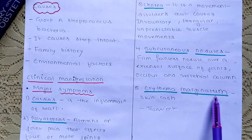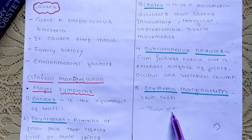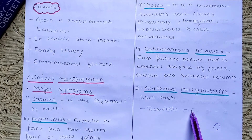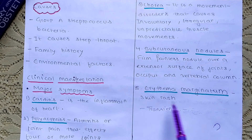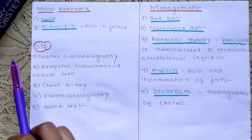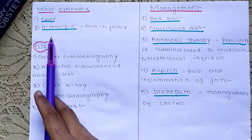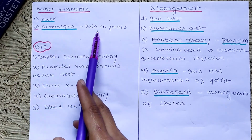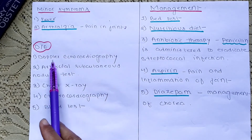Erythema marginatum is a transient skin rash — transient meaning temporary. Minor symptoms include fever and arthralgia, which is pain in the joints.